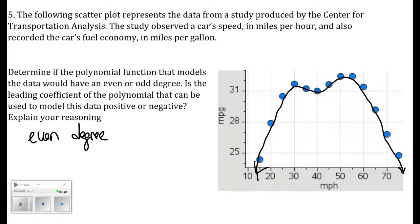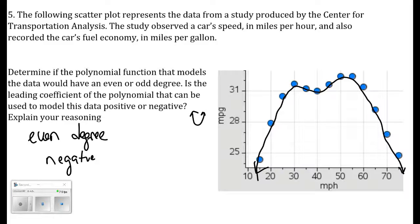The leading coefficient is negative, because positive even degree polynomials look like x squared and open upward, but this data goes to negative infinity on both ends. So we have an even degree polynomial with a negative leading coefficient. We can't determine the exact degree from the scatter plot, but we know it should be even.